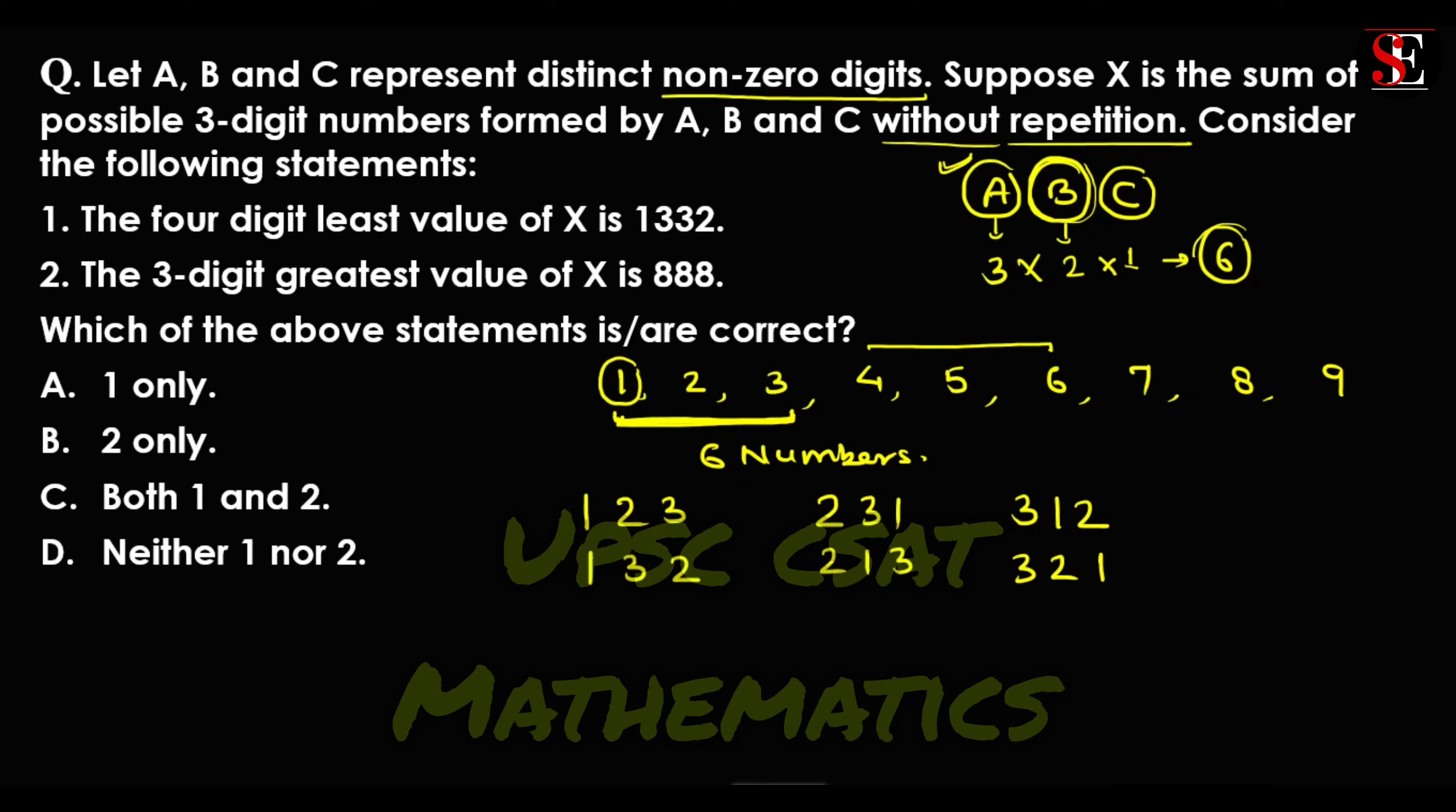The numbers are 123, 132, 231, 213, 312, and 321. They are the sum.